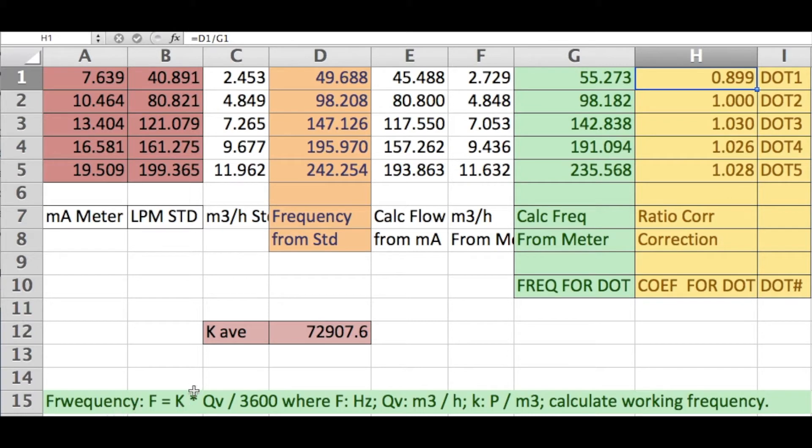Here is the frequency equals k times qv over 3600. qv is cubic meters per hour, and k is this number written on the meter. So that's how we calculate these frequencies. So we only need to put these numbers in. So I'm going to now show you how that's done on the meter.